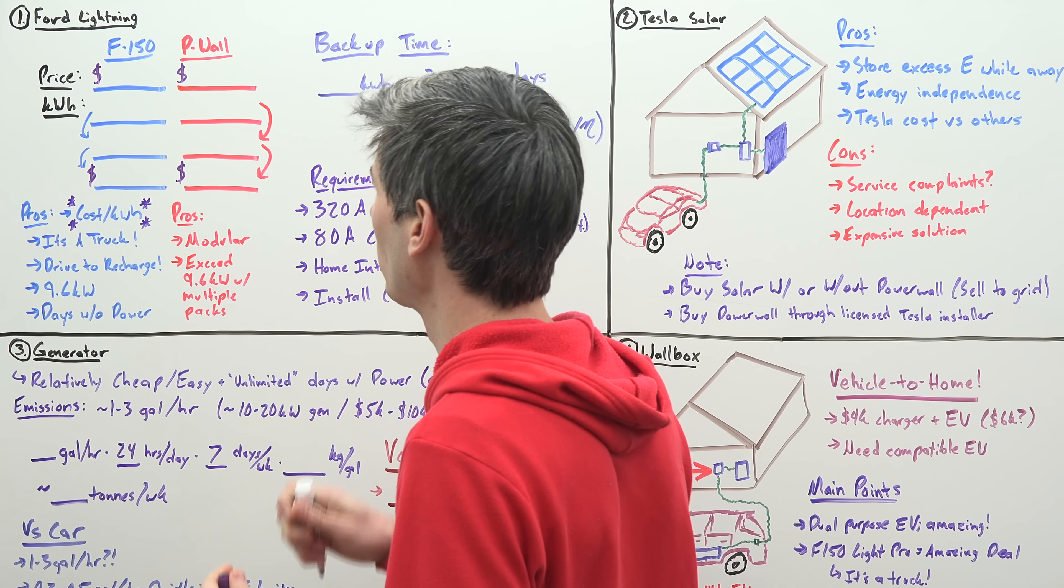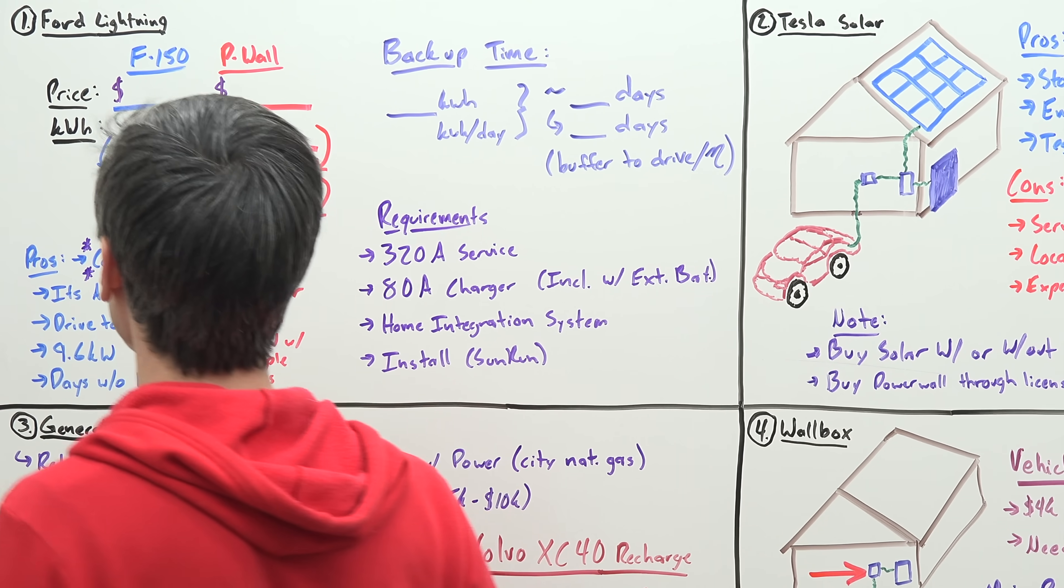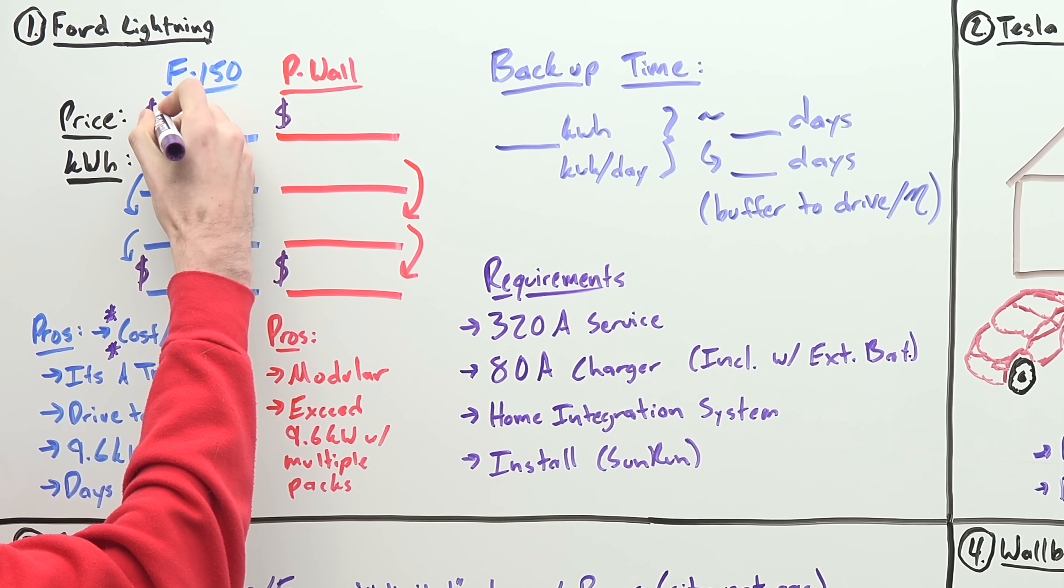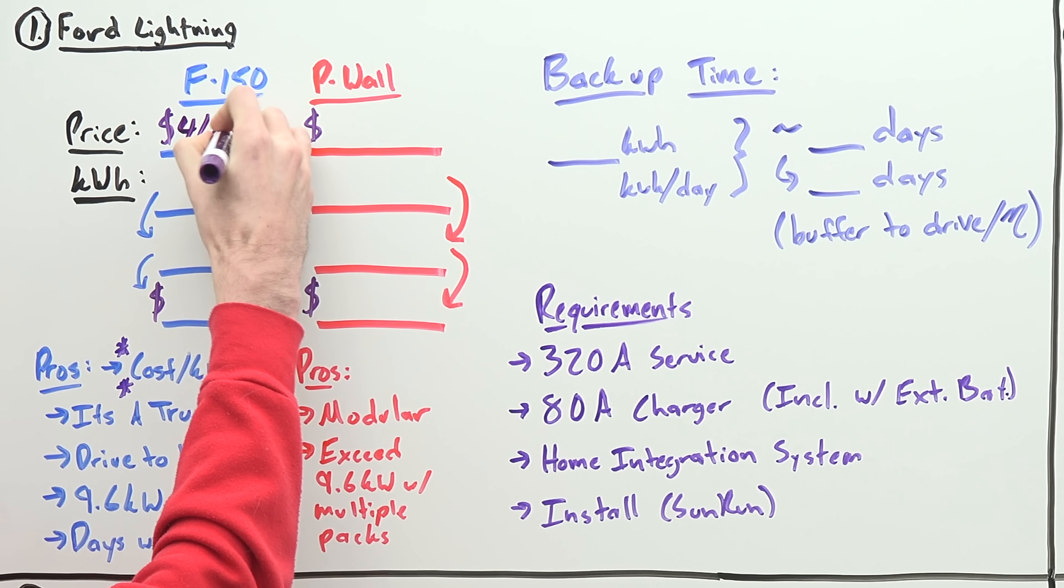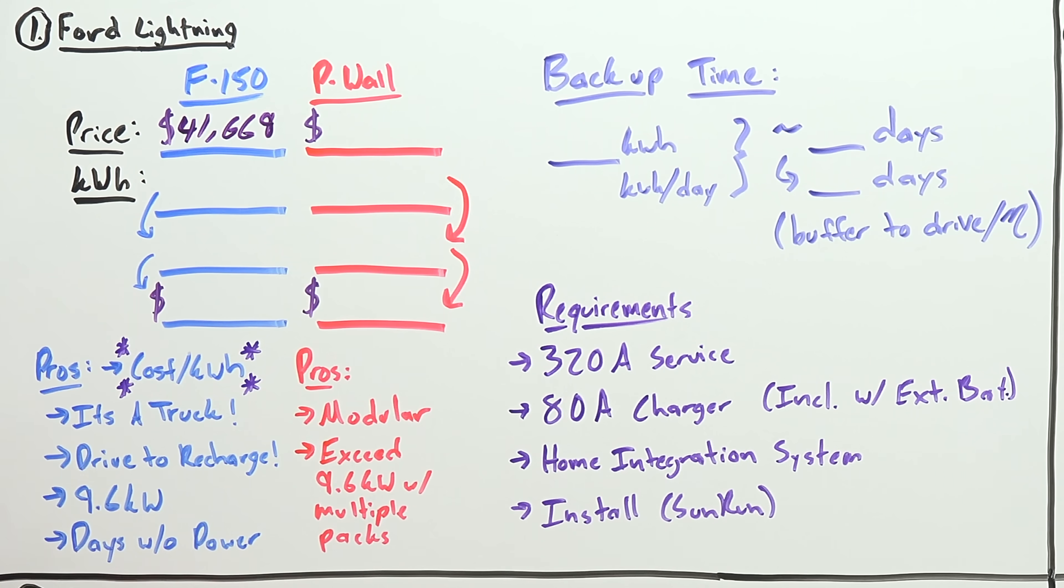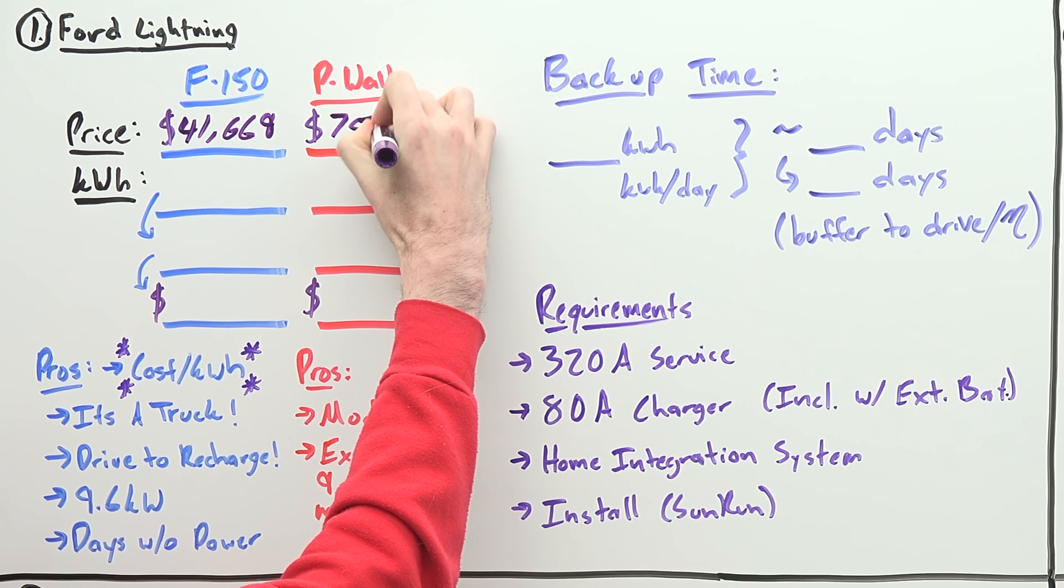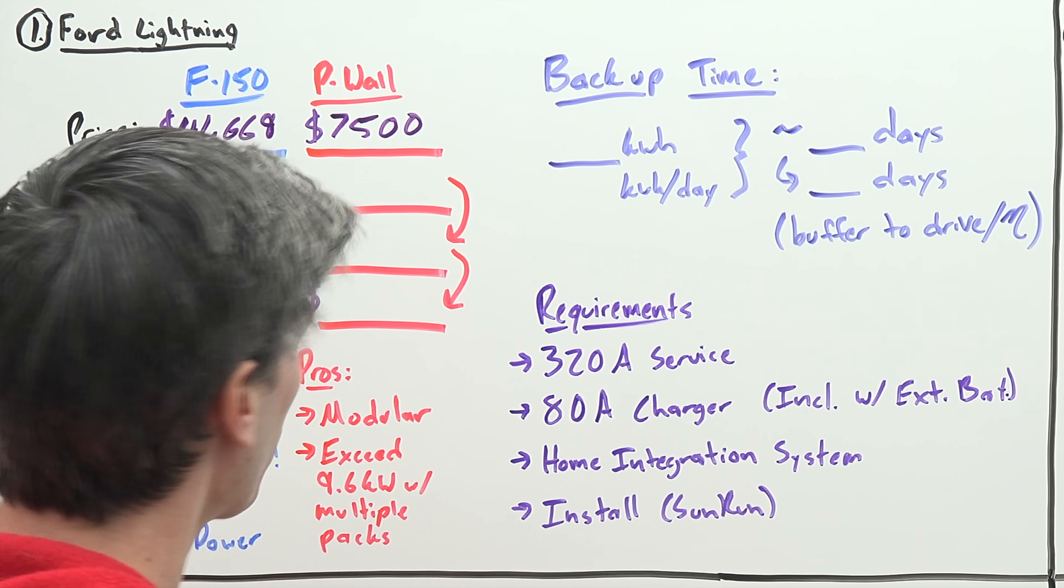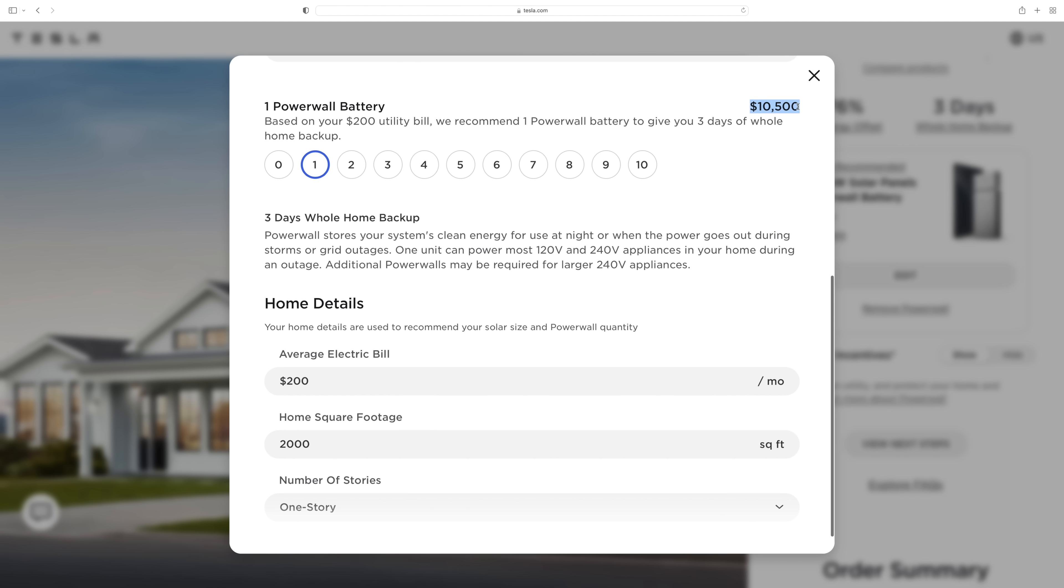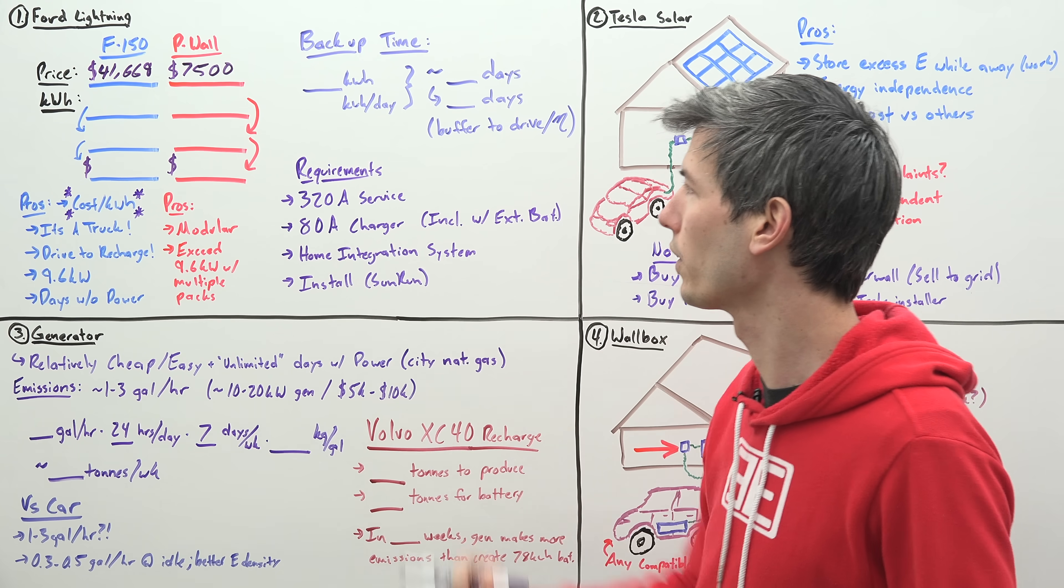So first let's just look at price. The F-150 Lightning Pro starts at $41,669 versus a Tesla Powerwall, if you buy them in multiples, they're $7,500 each. So if you just buy one, it's a bit over $10,000, but if you're buying several of them, you can get them for $7,500 each.